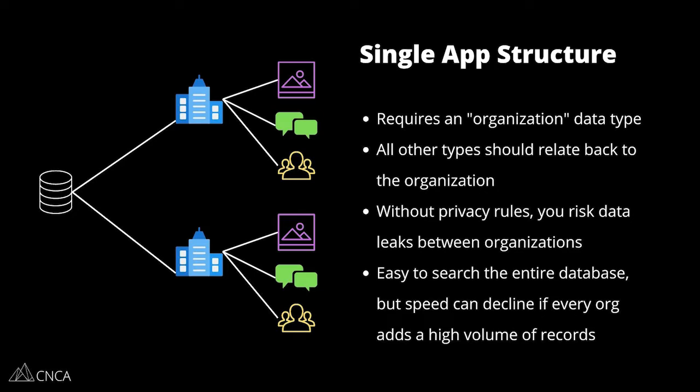You want to pay close attention to your privacy rules and really leverage this in your structure. Without these rules, you are going to risk data leaks between organizations. A single-app structure makes things really easy to search the entire database. There might be cases where you do want users to search across organizations — even if it's just you as a complete system admin — to gather everything from all of your organizations. It's easy to search because it's one single database. However, the speed of those searches can decline if each one of your organizations is adding a high volume of records. You do want to think strategically about the volume of activity and data being added, not just structurally but performance-wise.